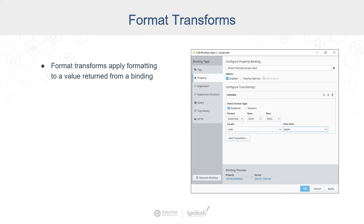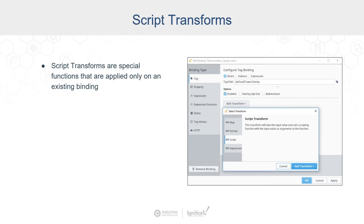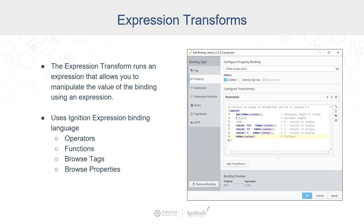Formatting transforms allow you to format a value returned from the binding — for example, formatting a number with two decimal places or formatting a date in a particular style. Script transforms are really powerful: you can run Python scripting right within the binding itself, to apply a calculation or algorithm. Lastly, the expression transform lets you take the value from the original binding and apply a calculation using expression functions. You can use all these transforms in one binding or just one — they run in sequential order.